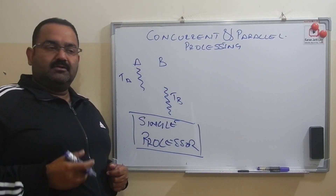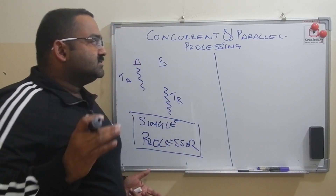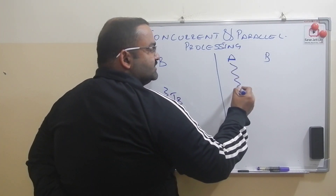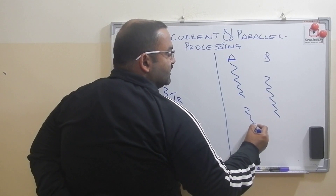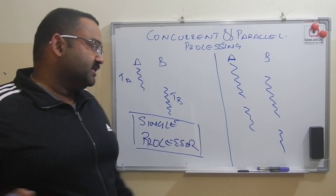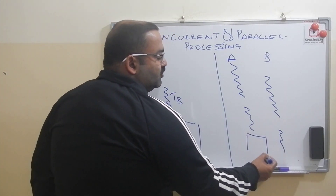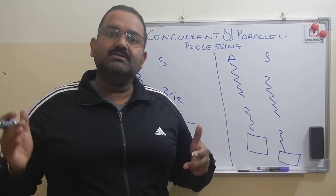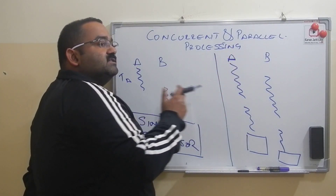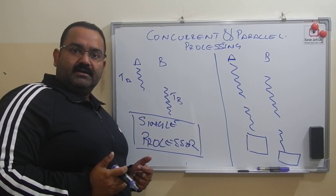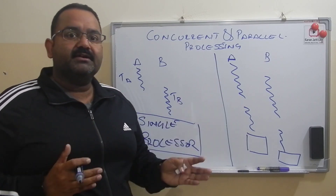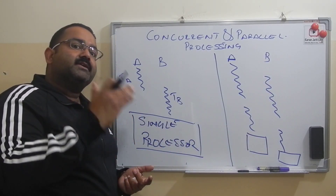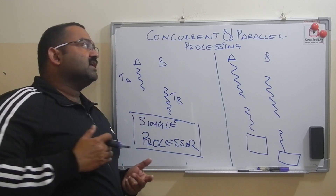So this is concurrent processing. Now comes parallel processing. In parallel processing, we also have thread A and thread B, and they are both executed at the same time. The difference between concurrent and parallel processing is that here we have two processors — we can have more than one processor — and these threads can run on separate processors. So this is called parallel processing. When we have more than one processor executing threads at the same time it is parallel processing, but when we run multiple threads on a SINGLE processor at almost the same time, we call it concurrent processing.